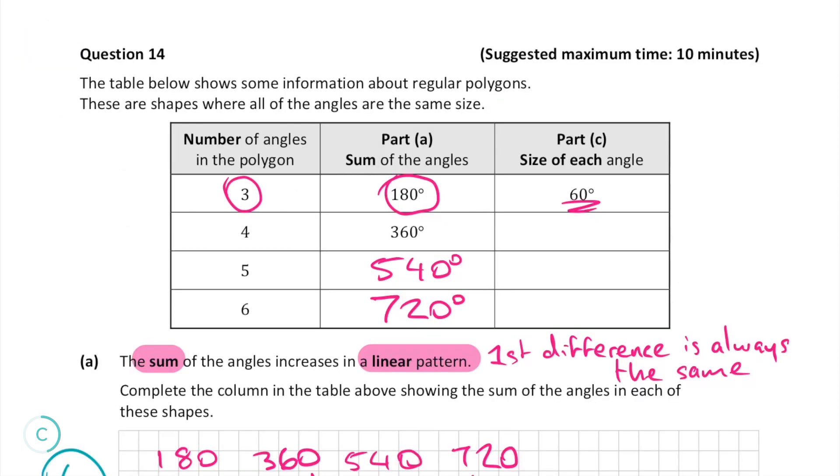We can do this for the second third and fourth polygons by dividing the sum of the angles by the number of angles to give us the size of each angle.